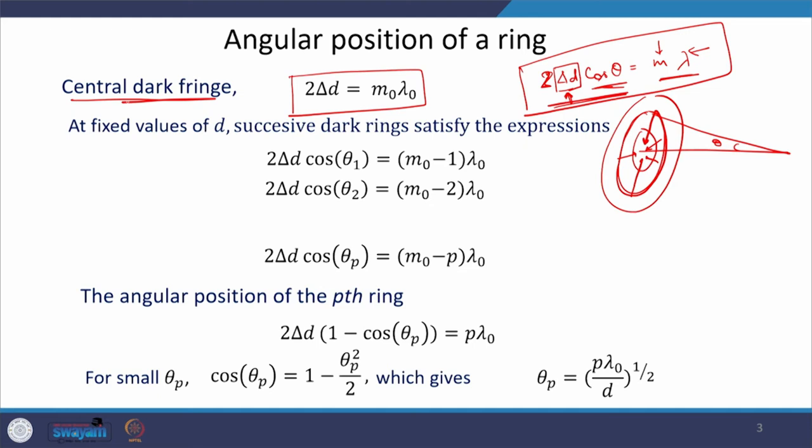When the air gap is 0, the condition of minima is satisfied because we also take into account the extra phase difference of π due to internal and external reflection at the beam splitter. Therefore, uniform darkness prevails when the air film thickness is 0. In this situation, if the angle of incidence is approximately 0 (normal incidence), cosθ ≈ 1 and the equation becomes 2δd = m₀λ₀, where m₀ is an integer. This is the condition for the central dark fringe.